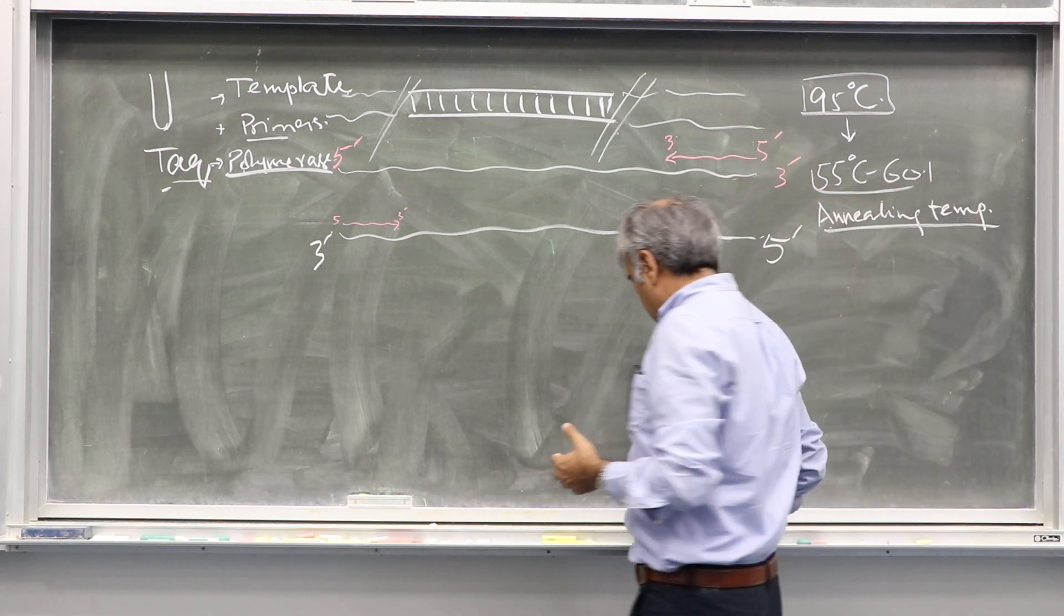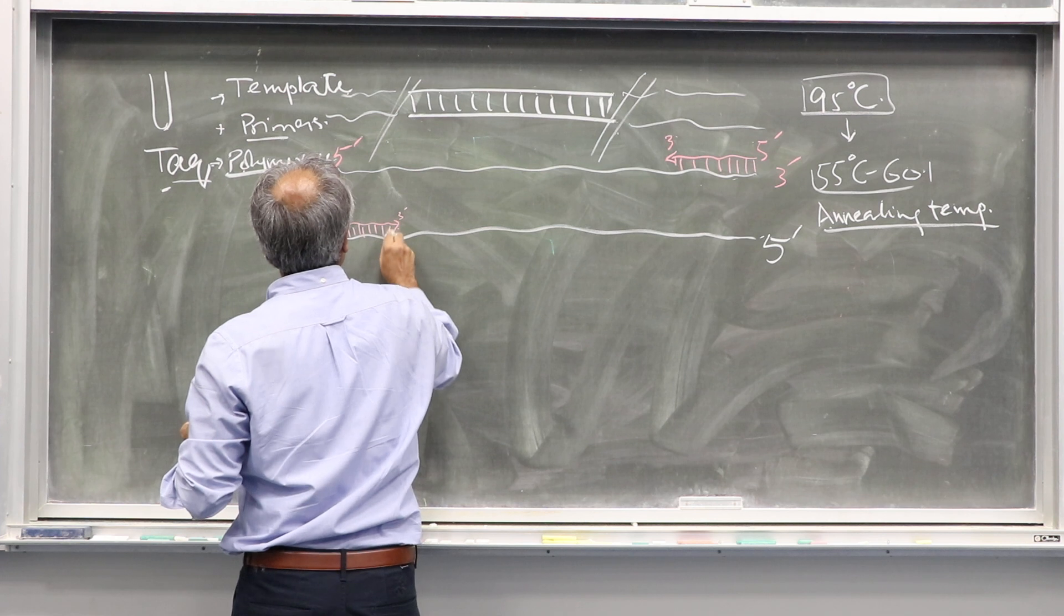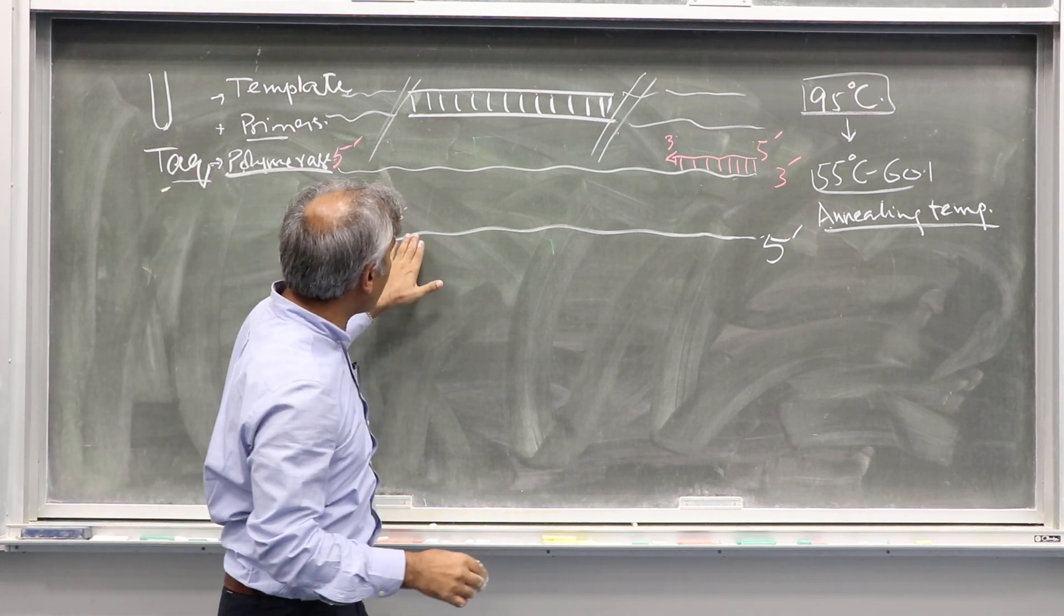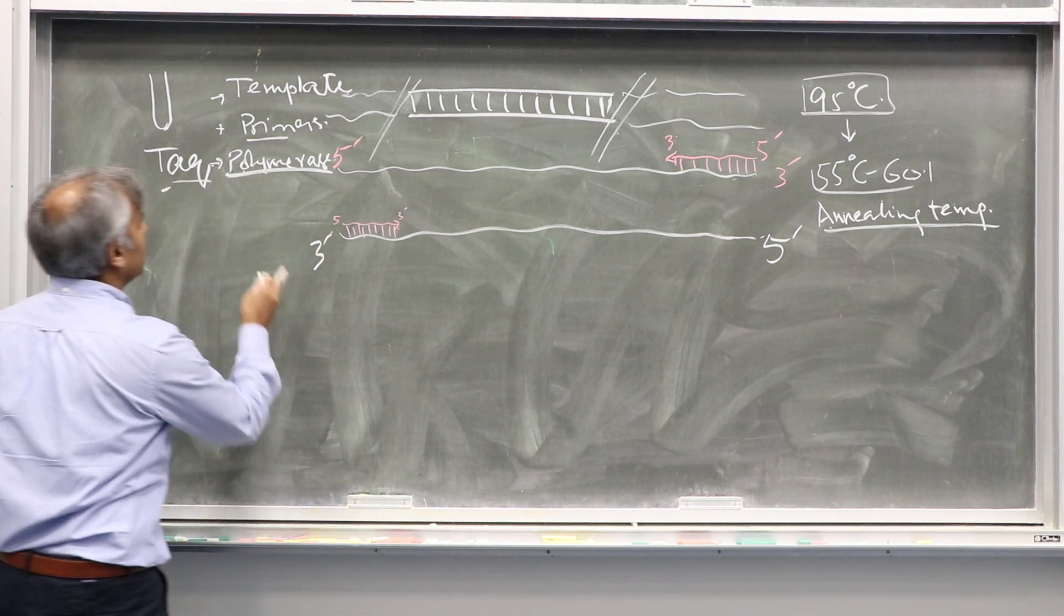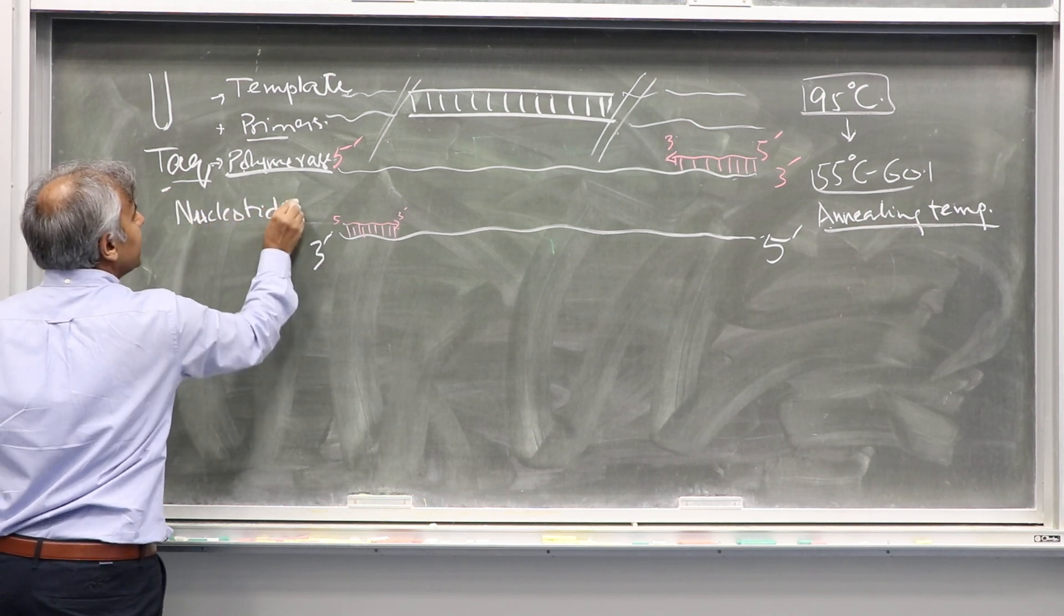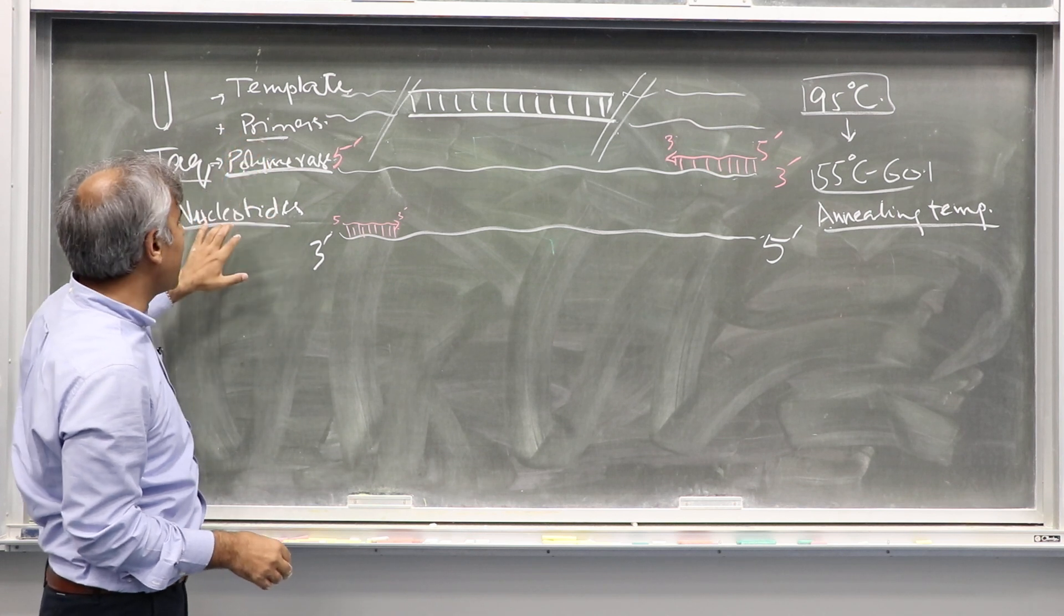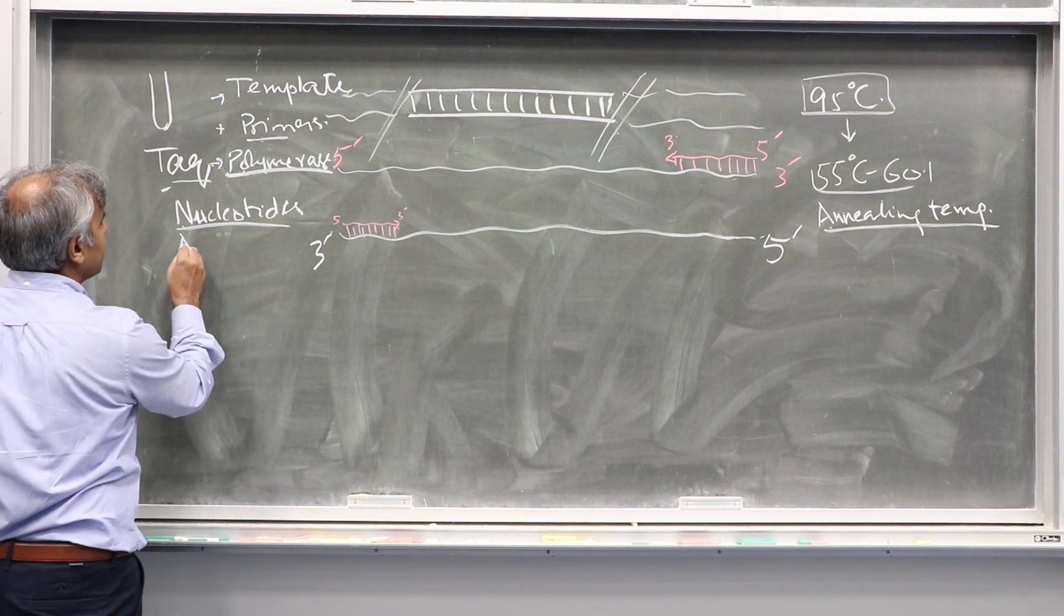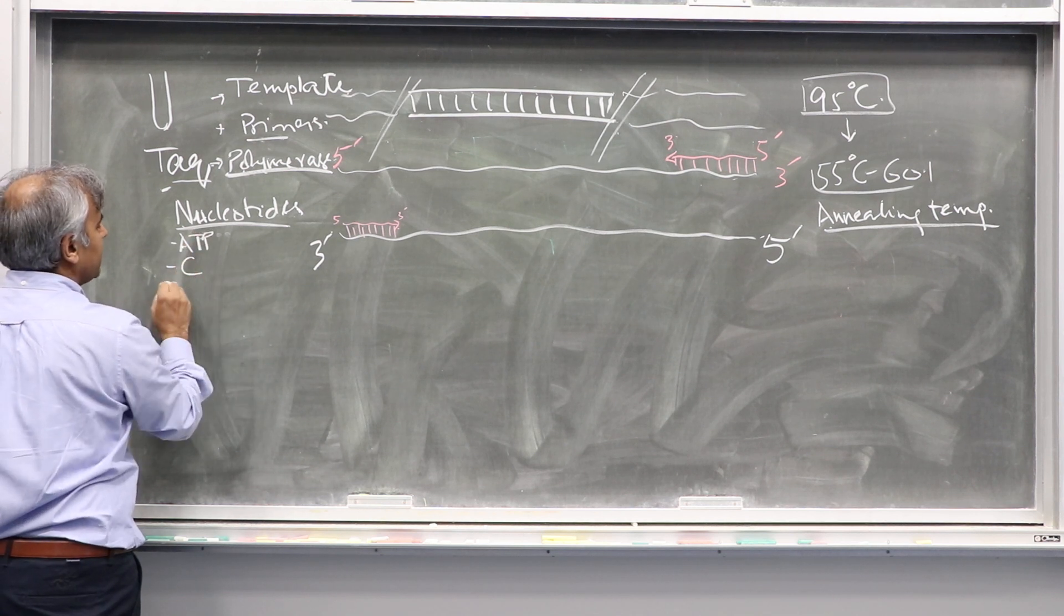Now these primers have free three prime hydroxyl group. If you want to synthesize a copy of this DNA, what you need in addition to polymerase, you need nucleotides. These nucleotides we have in the PCR mix—template, primers, polymerase, and nucleotides. These are nucleotide triphosphates: adenosine triphosphate, cytosine, guanine, thymine.